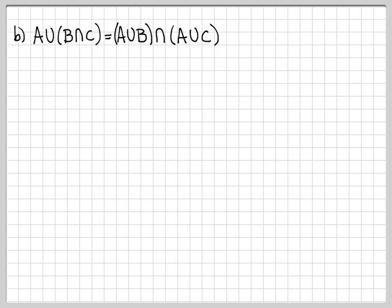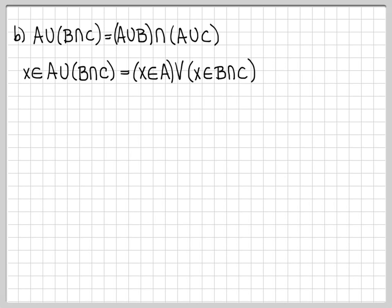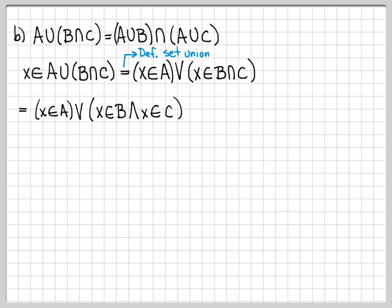Let's work another one. The other expression we examined: A union (B intersect C) equals (A union B) intersect (A union C). Let's do the same thing — pick an arbitrary element from the left side and start manipulating. What does it mean for X to be in A union something? It means X is in A or X is in the other thing, by the definition of set union. We'll leave the first part alone — X is in A — and what does it mean for X to be in the intersection? That means X is in B and X is in C, by definition of set intersection.